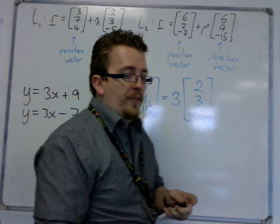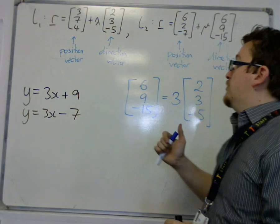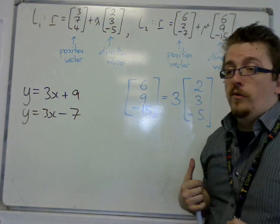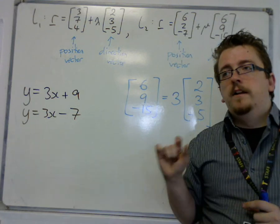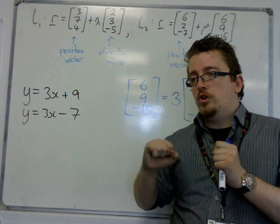In actual fact, 6, 9, minus 15 is going in the same direction as 2, 3, minus 5, only it's longer. So, it's a vector that is longer but is going in the same direction.